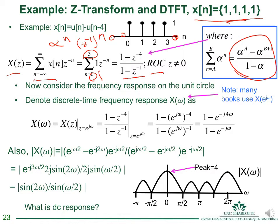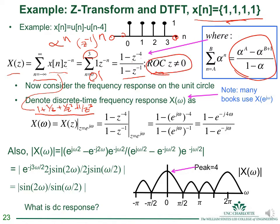The region of convergence is where the Z-transform exists. We can rewrite the sum as 1 + 1/z + 1/z² + 1/z³, and we can see that as long as z is not zero, this sum is finite. So the region of convergence is everywhere except z = 0.